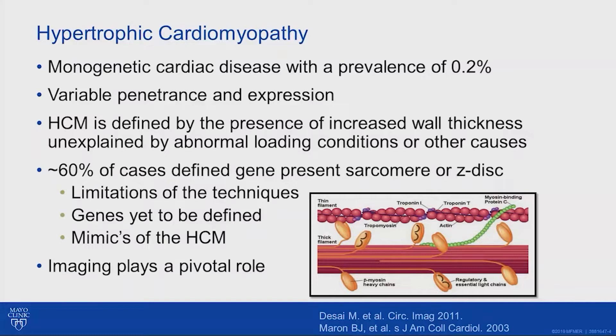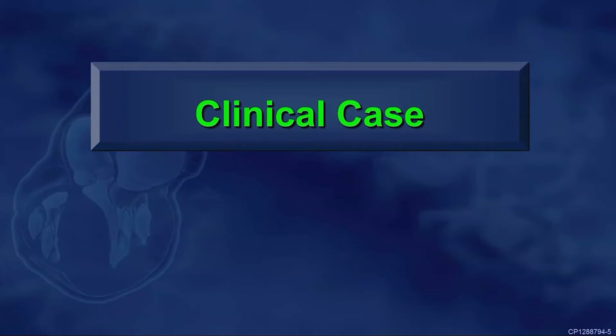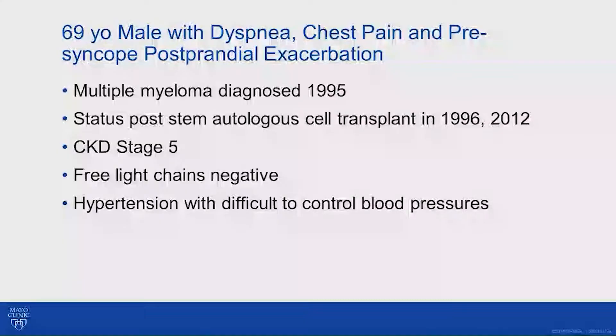About 60%, maybe even up to 70% of patients with hypertrophic cardiomyopathy will have a defined gene if you send their blood in for genetic analysis — and genetic availability is growing all the time. But there are limitations still to our techniques and genetics. There are genes we probably have not yet defined that could impact not only the sarcomeric genes but also Z-band genes. And then there are the mimics of hypertrophic cardiomyopathy. As imagers, we are often the first people to think about this.